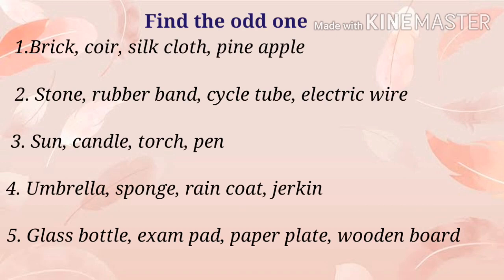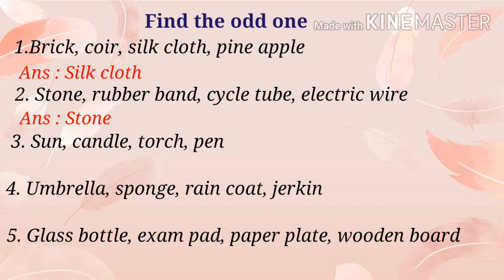Find the odd one. First one: brick, coir, silk cloth, pineapple — the answer is silk cloth, because the remaining three have rough surfaces while silk cloth alone has a smooth surface. Second one: stone, rubber band, cycle tube, electric wire — except stone, the remaining three are flexible. Stone is hard, so the answer is stone.